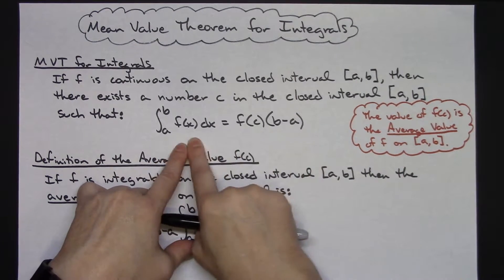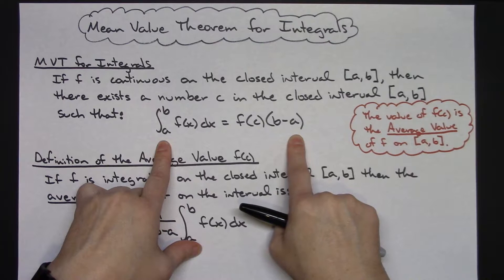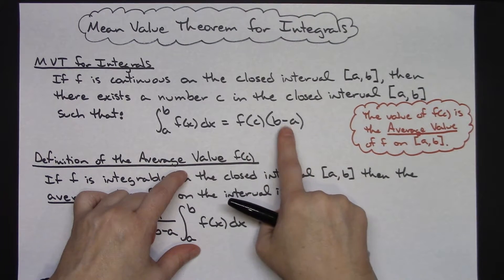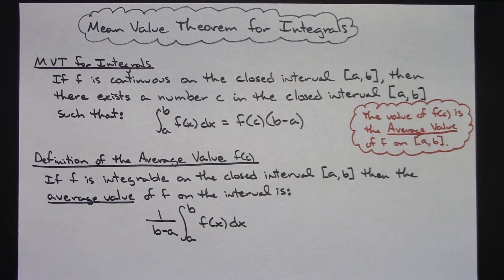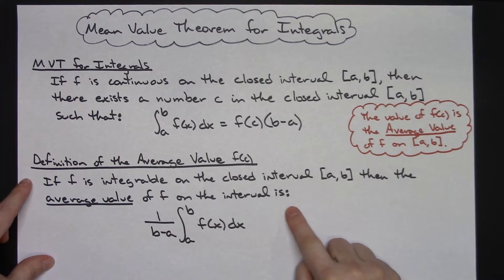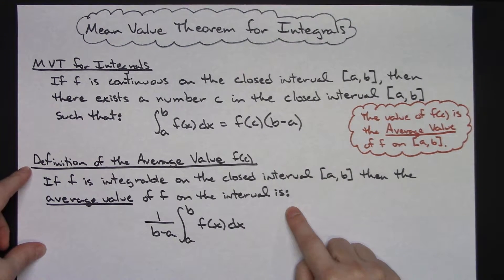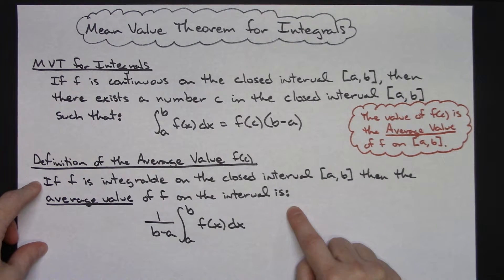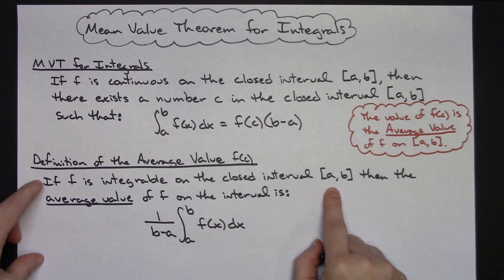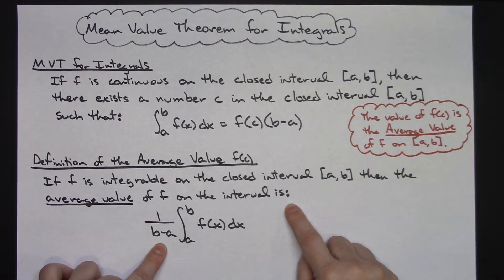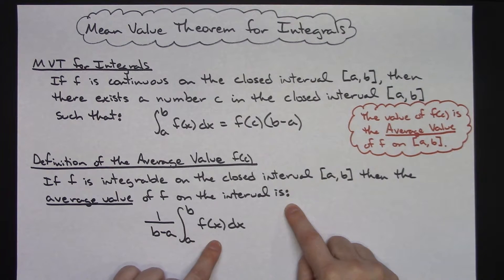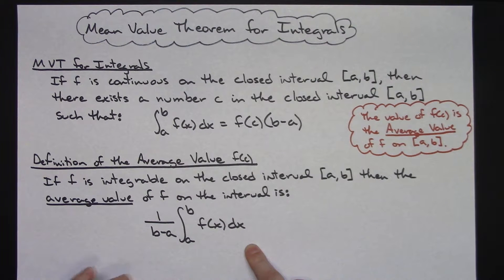Now if I take this mean value theorem for integrals and solve it for f(c) — in other words, divide both sides of the equation by b minus a — then I can come up with a definition for the average value. If f is integrable on the closed interval from a to b, then the average value of f on the interval is equal to 1 over (b minus a) times the integral from a to b of f(x) dx.